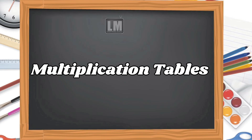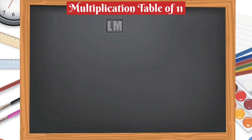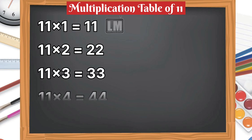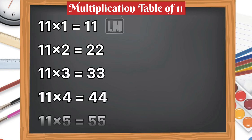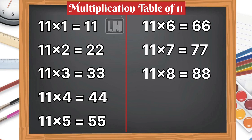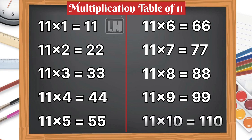Let's learn multiplication table of 11. 11 1s are 11, 11 2s are 22, 11 3s are 33, 11 4s are 44, 11 5s are 55, 11 6s are 66, 11 7s are 77, 11 8s are 88, 11 9s are 99, 11 10s are 110.